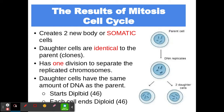The result of mitosis and the cell cycle is two brand new somatic, or body, cells. These cells must be identical to the parent cell. So if your liver is making new cells, they must be identical to the original liver cells. The daughter cells are clones of the parent.